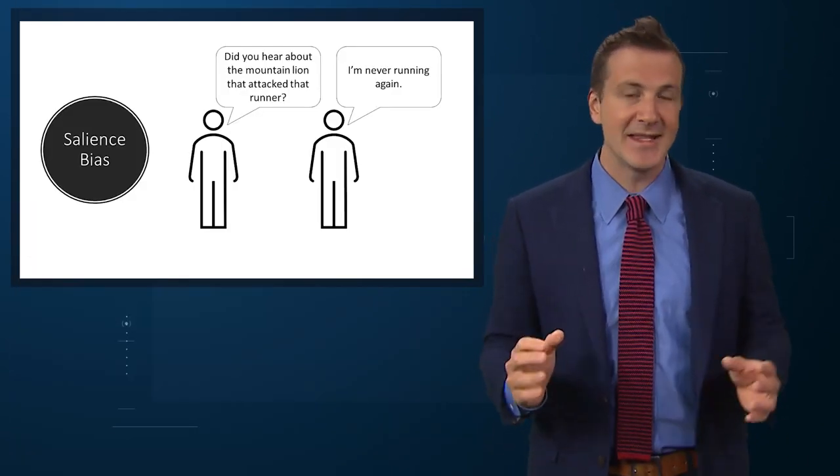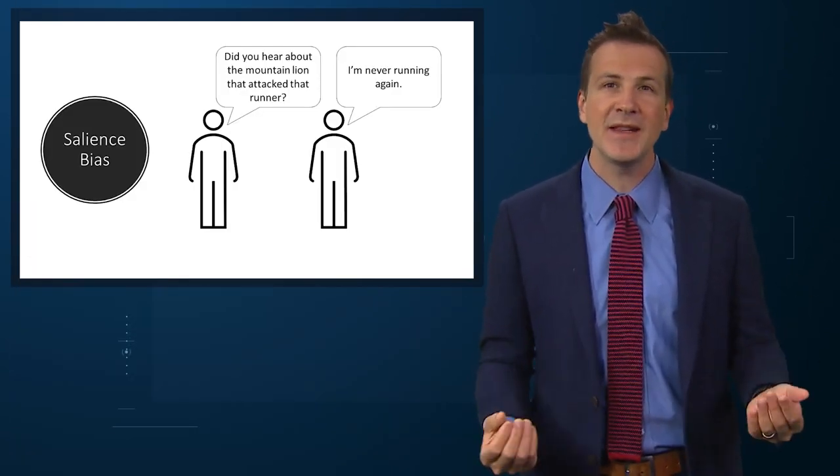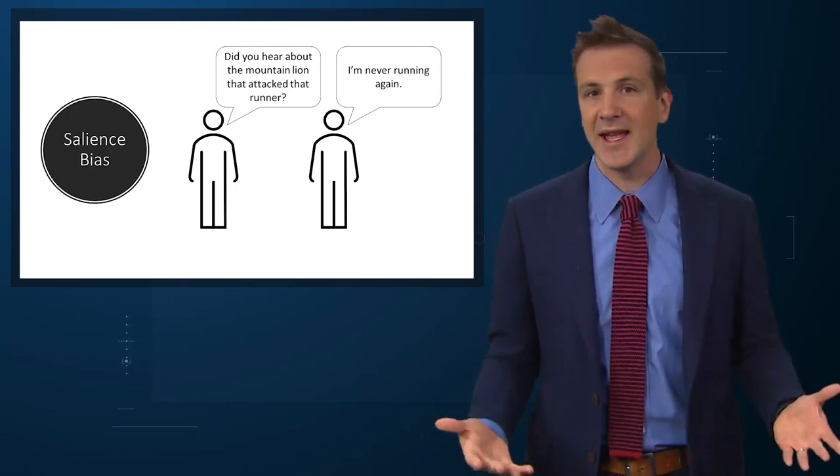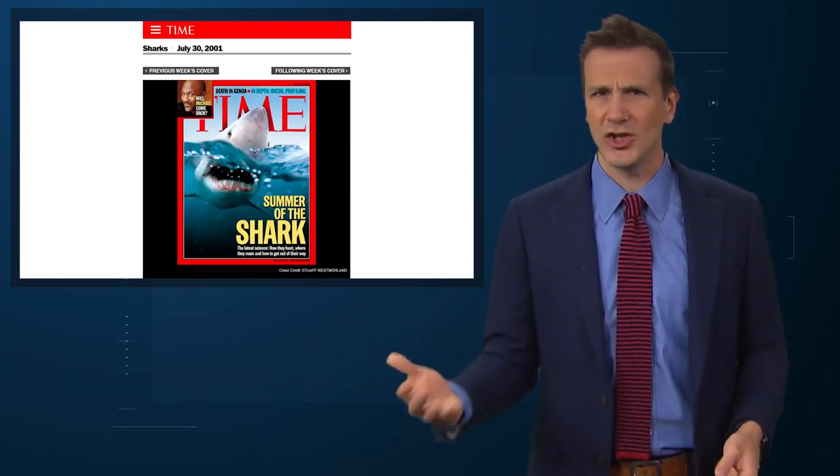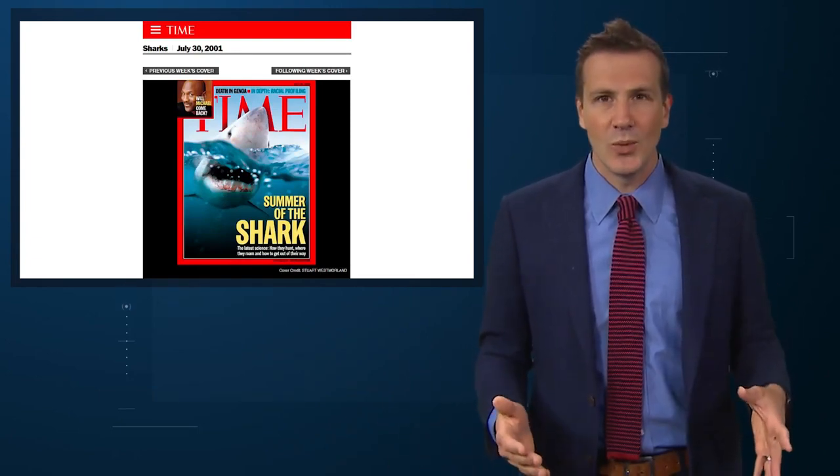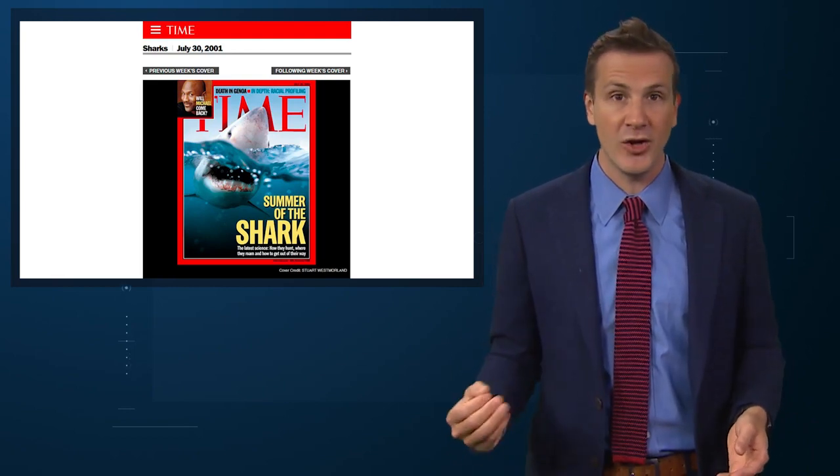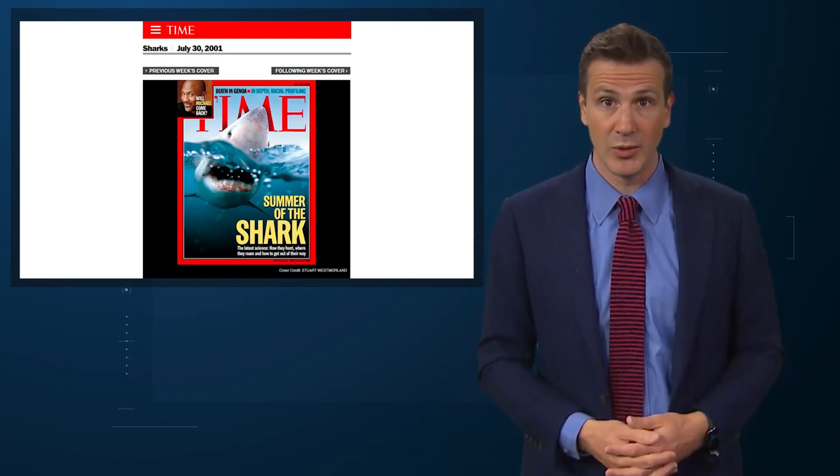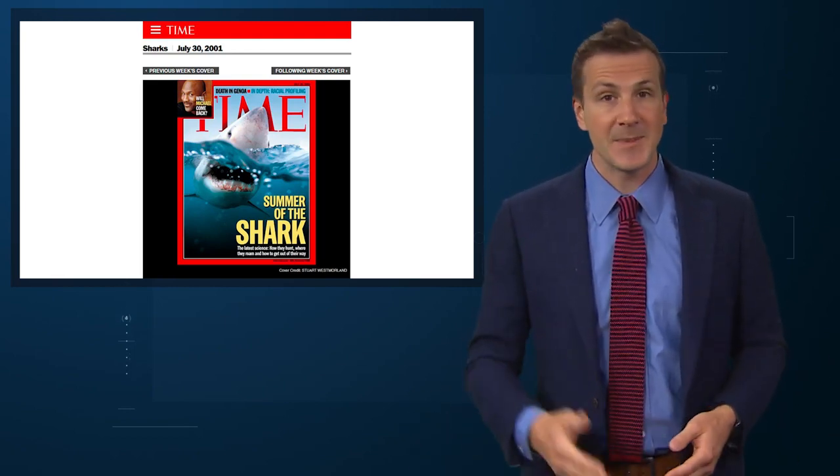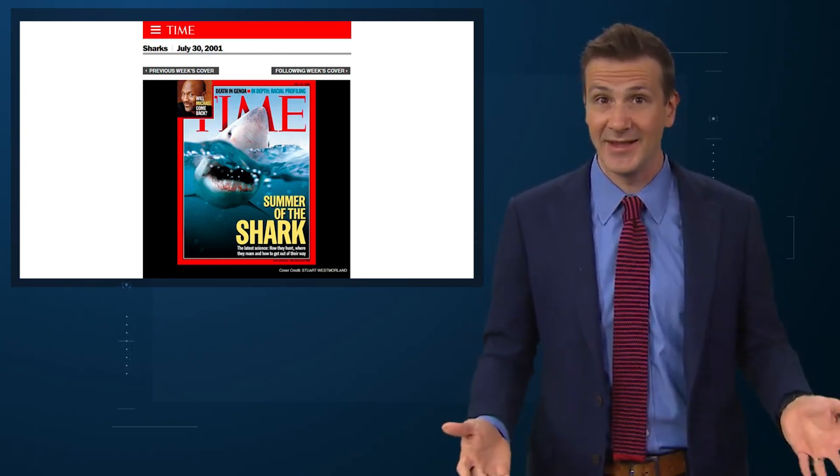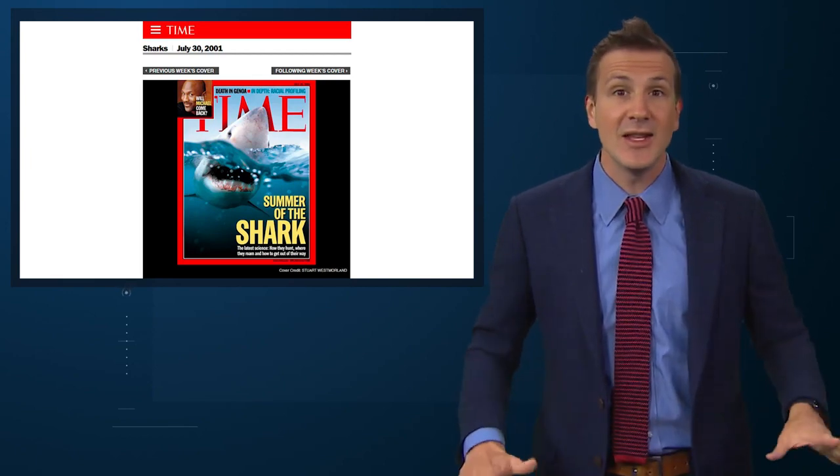Number three: Salience bias. This is the tendency of people to believe things are more likely when they are emotionally resonant, even when that's not the case. Remember the summer of the shark? In the summer of 2001, major news networks breathlessly covered every shark attack that occurred on American beaches, leading many people to avoid going in the ocean. Despite the actual statistics, there were less shark attacks and less fatalities than in the year prior.